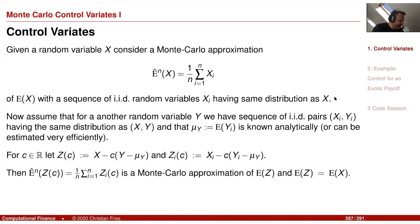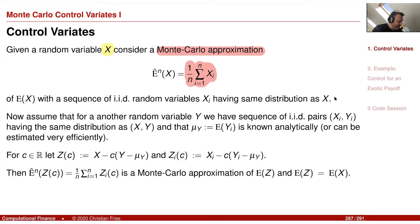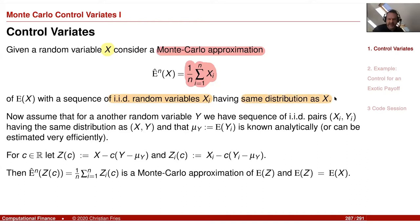We are in the situation where we have a random variable x — for example the payoff of some option generated from a Monte Carlo simulation — and we would like to calculate a Monte Carlo approximation of the expectation of x. Going back to our definition, we consider a sequence of iid random variables x_i and take the time average. We know this converges to the expectation of x given that every x_i has the same distribution as x. This is the Monte Carlo method.